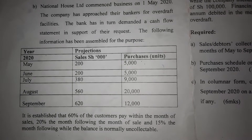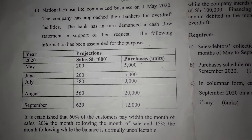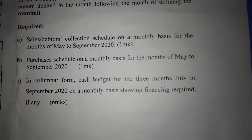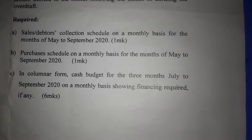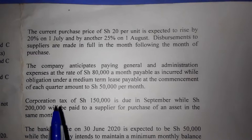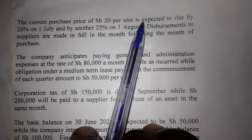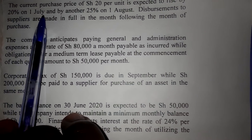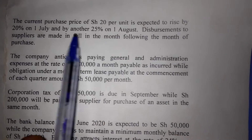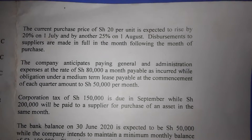Welcome back to the AJL show where we educate and retain. In this video, we are going to calculate the purchases schedule on a monthly basis for the month of May to September. This question will be affected by additional information number two, where the current purchase price of 20 shillings per unit is expected to rise by 20% on 1st July and by another 25% on 1st August. Disbursements to suppliers are made in full in the month following the month of purchase.